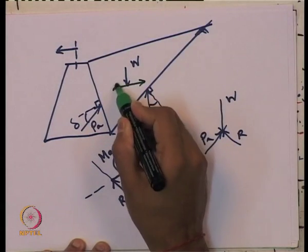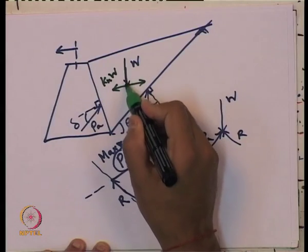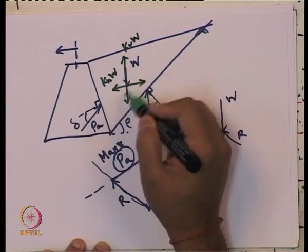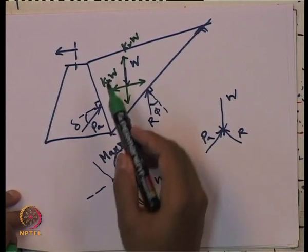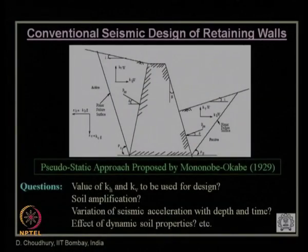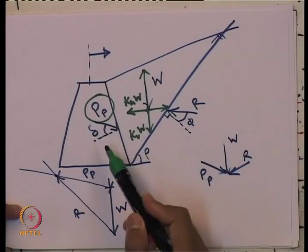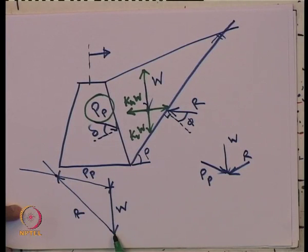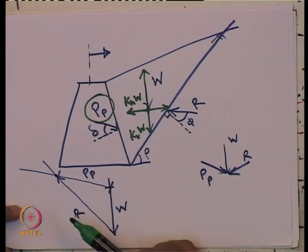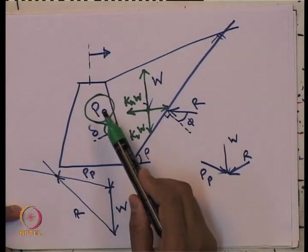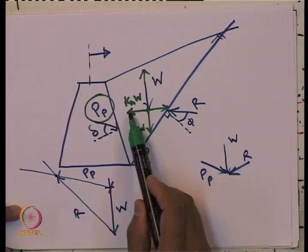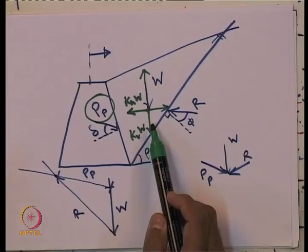In the Mononobe-Okabe method, the values K_H·W and K_V·W are added in both directions for analysis. The critical direction giving the maximum value of PAE is the earthquake condition estimate using this pseudo-static approach. Similarly for the passive state, using Coulomb's passive earth pressure force polygon where W is known and R and Pp directions are known, the Mononobe-Okabe method introduces K_H·W and K_V·W for pseudo-static analysis.